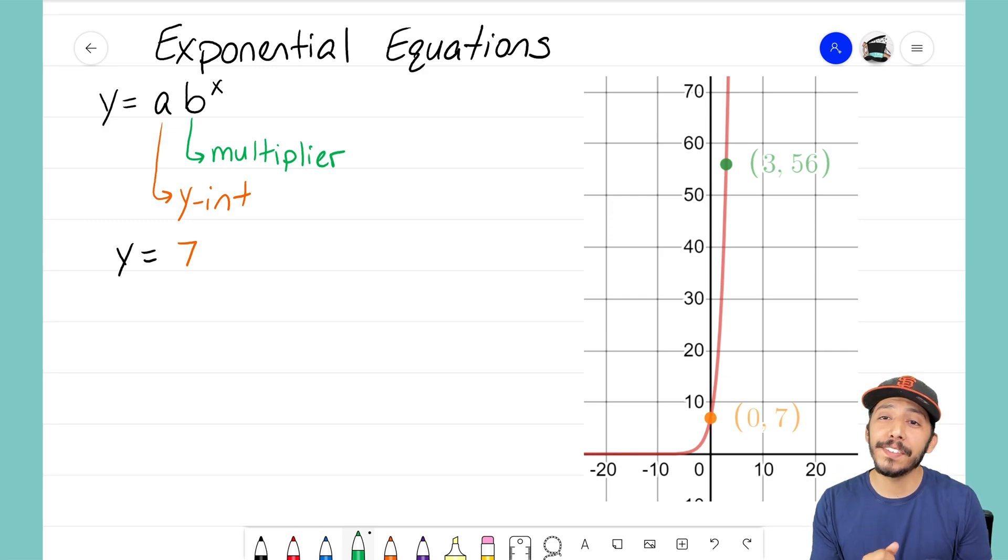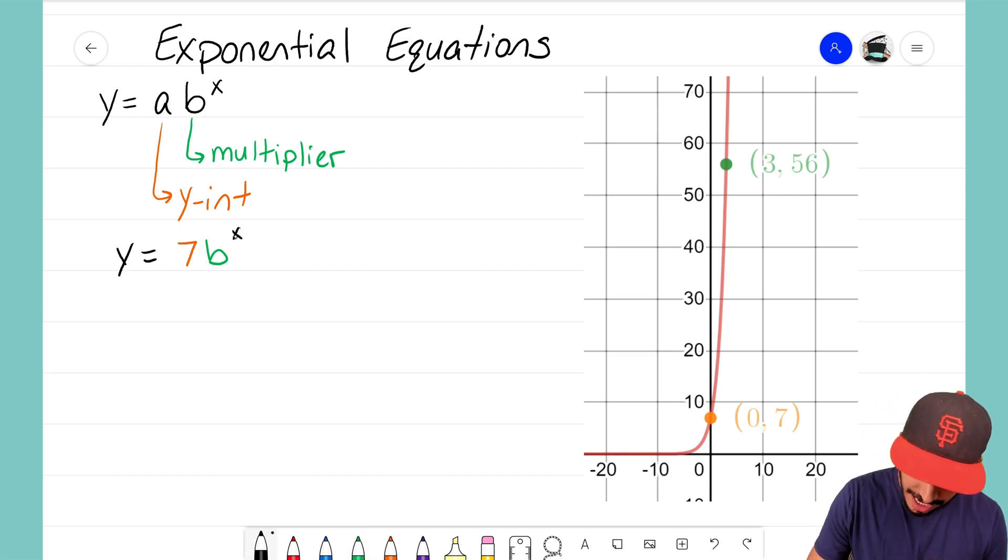So let's see if we can figure that out. To do that I'm going to write B here as my variable because I don't know what that term is. I see that that's the multiplier - we don't know what the multiplier is so let's just leave that as B and I have my exponent here of X.